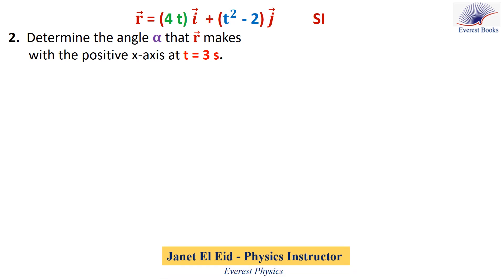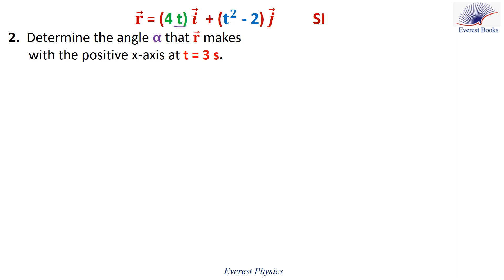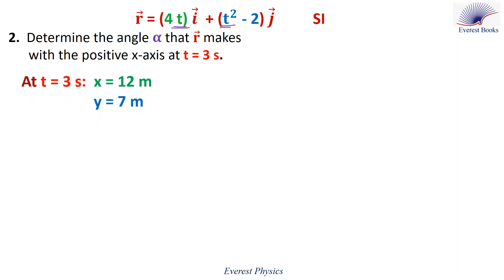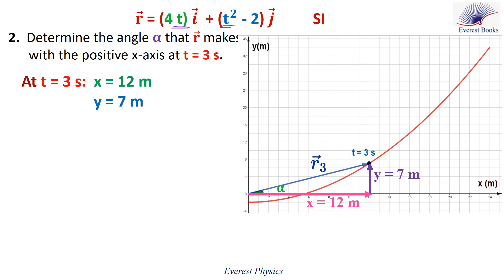Let's move to part 2. Determine the angle alpha that the position vector R makes with the positive x-axis at time 3 seconds. We start by calculating the abscissa and the ordinate at time 3 seconds. Replacing t by 3 in the expression of the position vector gives x equals 12 meters and y equals 7 meters. Here is the trajectory of the moving particle. We draw the position vector at time 3 seconds. Here is the abscissa, here is the ordinate, and here is the angle alpha that the position vector makes with the positive x-axis. From the right-angle triangle in the figure, we can write tangent alpha equals y over x. With y equal to 7 meters and x equal to 12 meters, tangent alpha equals 0.58.